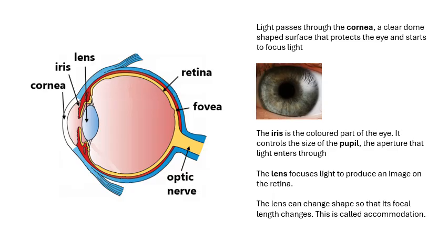Light passes through the cornea. The cornea at the front of the eye is this transparent, tough layer, a clear dome-shaped surface that protects the eye and it starts to focus the light. It actually does more focusing than the lens does.